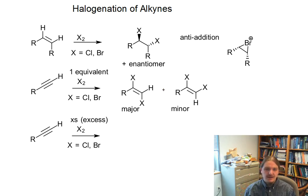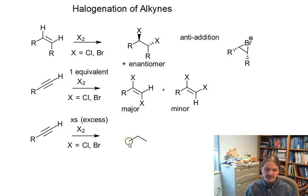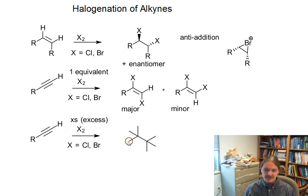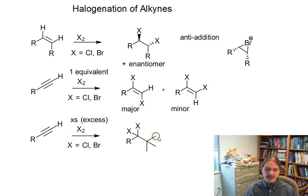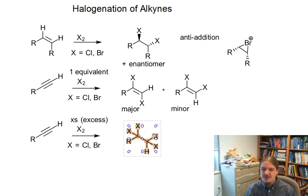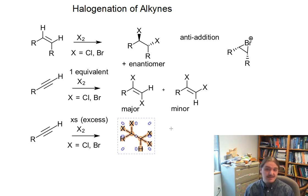Of course, it can happen twice because there's still a pi bond after that first addition. You can do a second addition across the alkene and end up with halogen atoms all over the place. Neither of those carbon atoms is a chirality center, so the product doesn't have any stereochemistry to talk about.